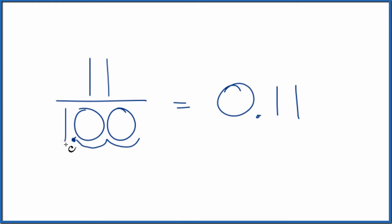That gives us one, so we have 11 over one. But we also have to move the decimal place on the top two places.